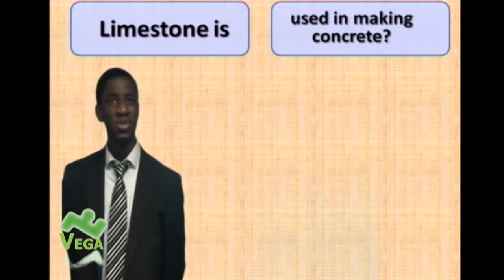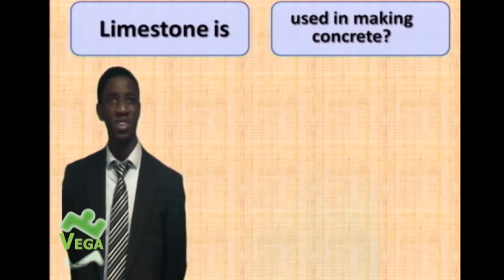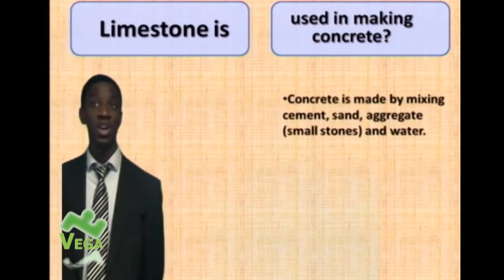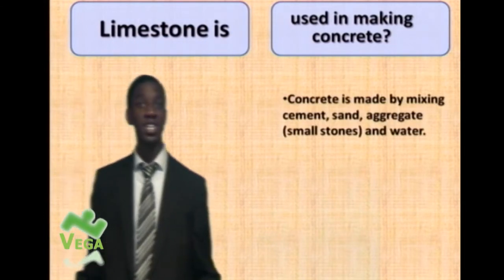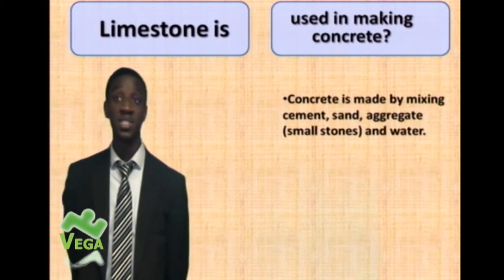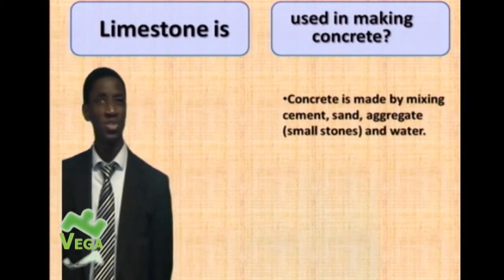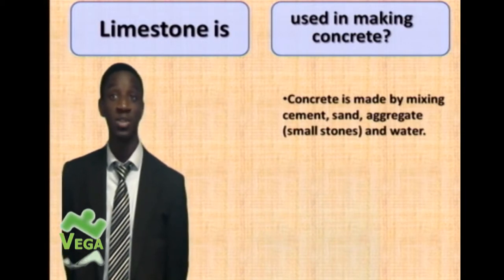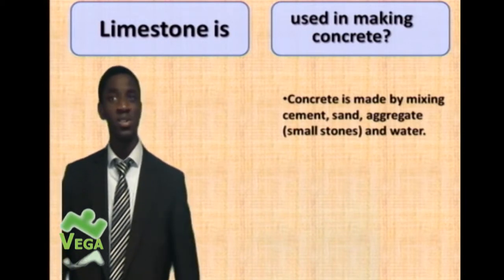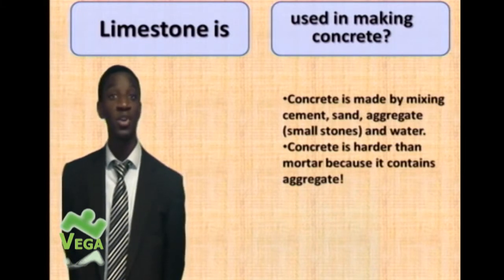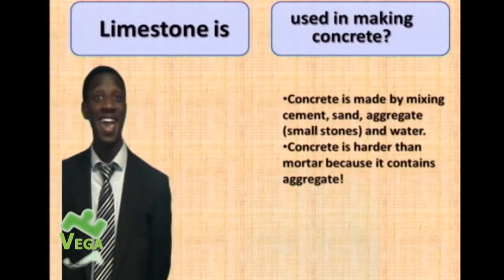Limestone is also used to make concrete — this is the one I found the most surprising. Concrete is made by mixing cement, sand, aggregate, and water. Aggregate is small stones. Concrete is harder than mortar because it contains aggregate.